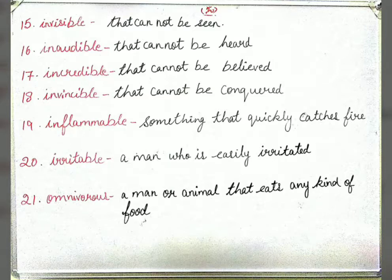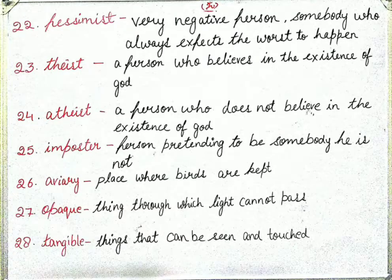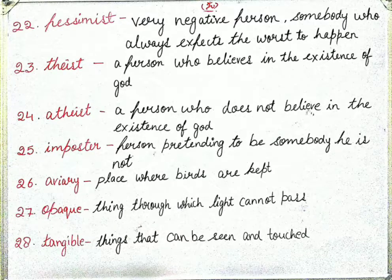Next is 'omnivores' — a man or animal that eats both plants and flesh. Jo plants bhi khaye aur meat bhi khaye use omnivores kehte hain. Next is 'pessimist' — a very negative person, somebody who always expects the worst to happen. Pessimist ek aisa person hota hai jo hamesha negative soche, hamesha bura hi soche.